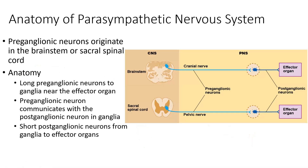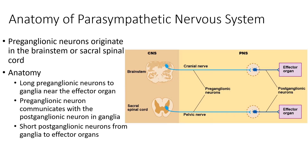Now we'll look at the anatomy of the parasympathetic nervous system. The preganglionic neurons here are much longer because the parasympathetic ganglia are far away from the brain and spinal cord. In some instances these are called cranial nerves, or pelvic nerves if we're talking about S2, S3, S4. The preganglionic fiber travels all the way out to a ganglia that is closer to the effector organ, and then there is a short postganglionic neuron that goes from that ganglia to the effector organ. This is one of the obvious structural differences between sympathetic and parasympathetic.